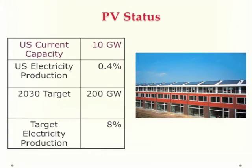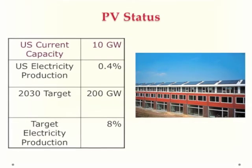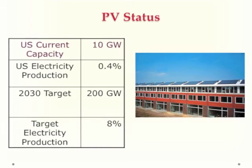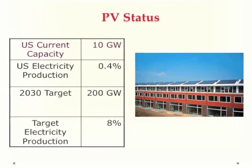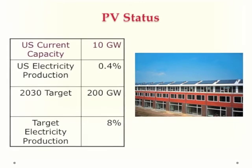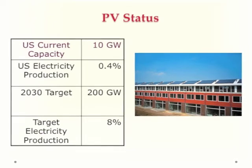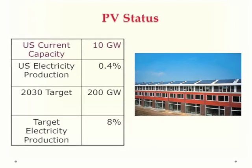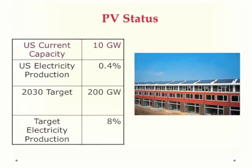PV is very rapidly growing. Current U.S. capacity is 10 gigawatts, equivalent to 10 large nuclear power plants. Most of this is rooftop PV, and production is about 0.4% of U.S. electricity. The 2030 target is 200 gigawatts — 20 times the present value — which would produce about 8% of U.S. electricity.